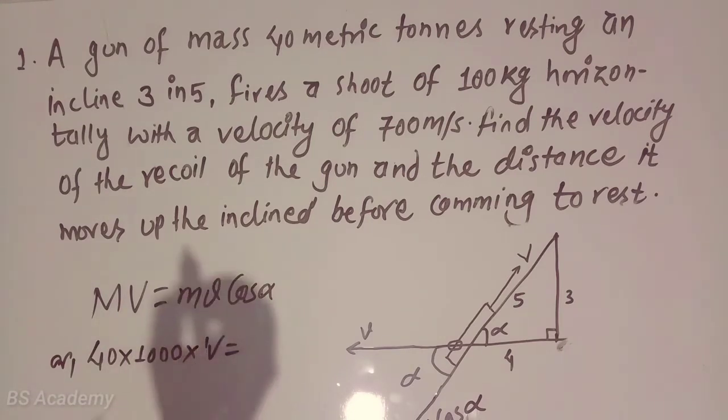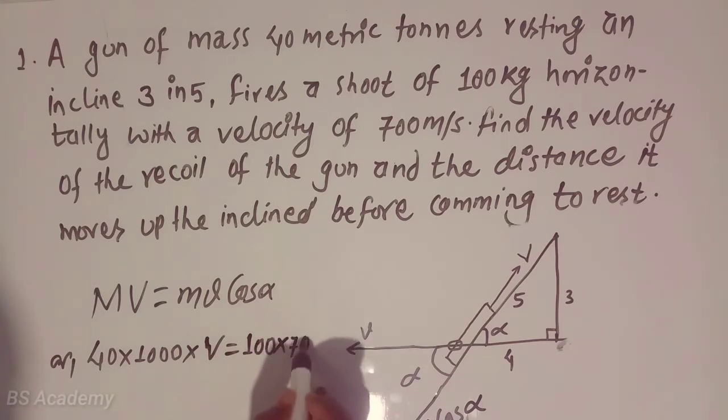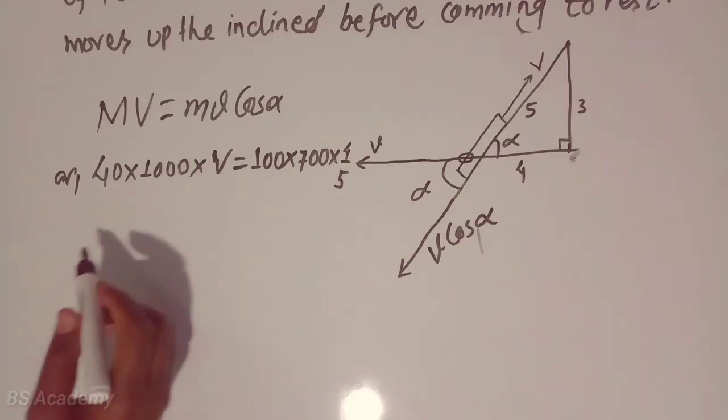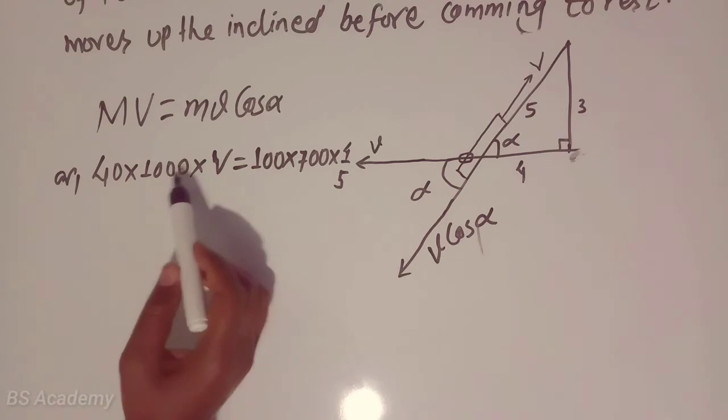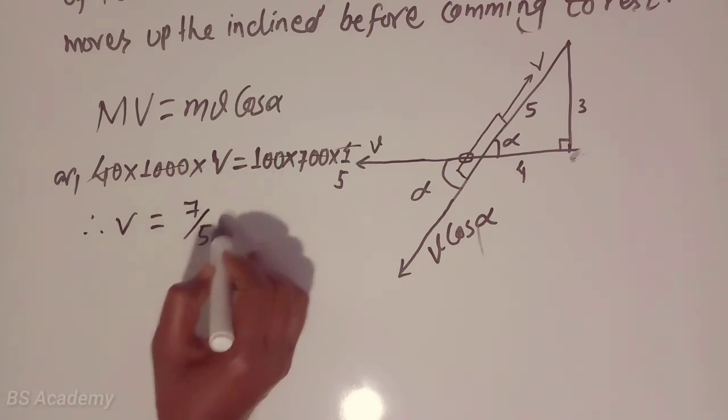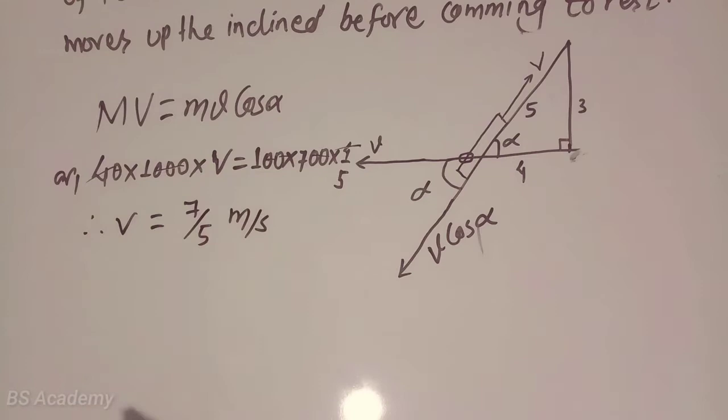V that we have to calculate, and mass of shot is given 100 kg times velocity is 700 times cos theta, which is V by H, 4 upon 5. After the simplification, we can find the value of V which is 7/5 meters per second. This is the velocity of recoil of the gun.